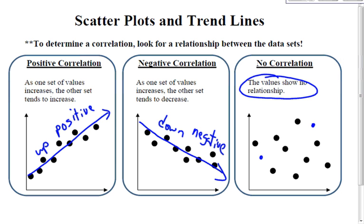The points are all over the place, and that means that you can't predict another value that's going to happen because there is no trend.